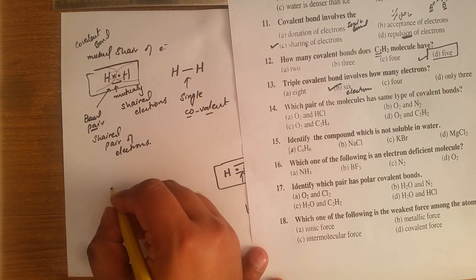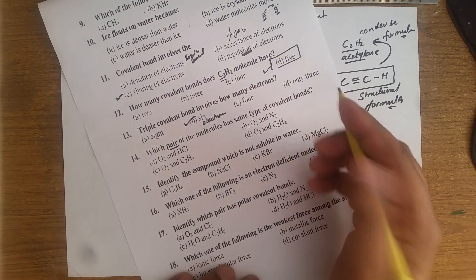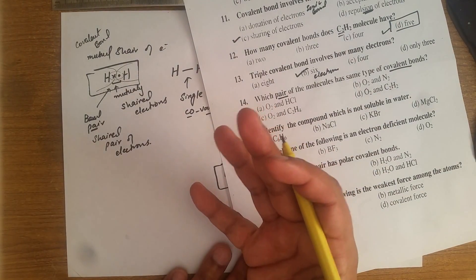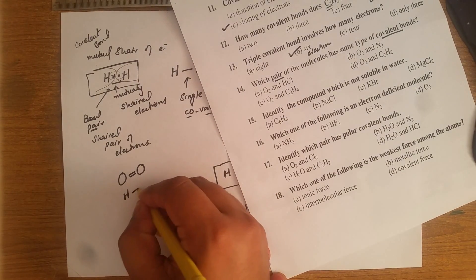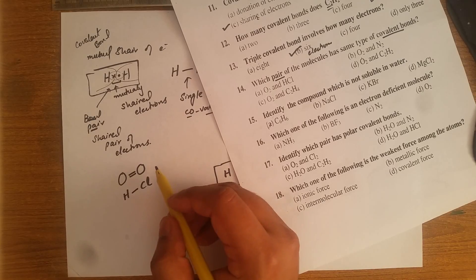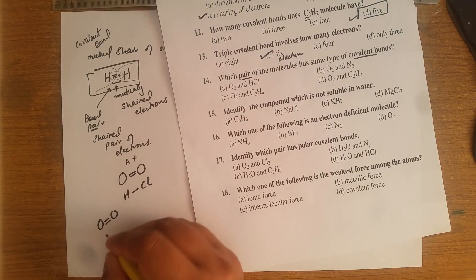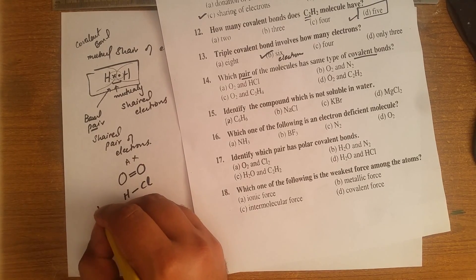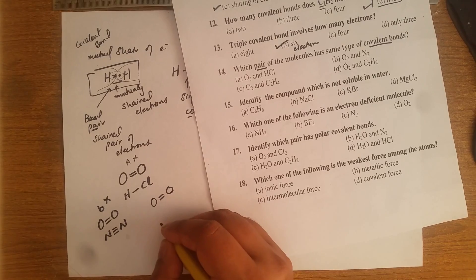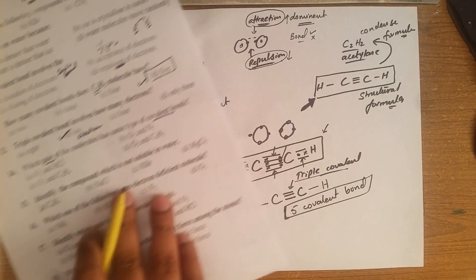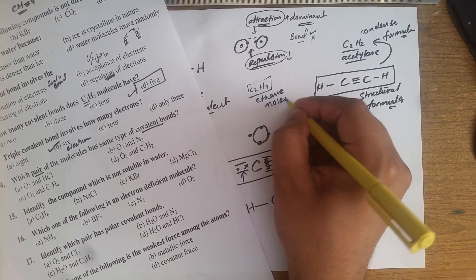Which pair of molecules has the same type of covalent bonds? Oxygen (O₂) has a double covalent bond. HCl has a single covalent bond — so option A is not a good answer. Option B: oxygen has a double covalent bond and nitrogen (N₂) has a triple covalent bond — wrong answer.